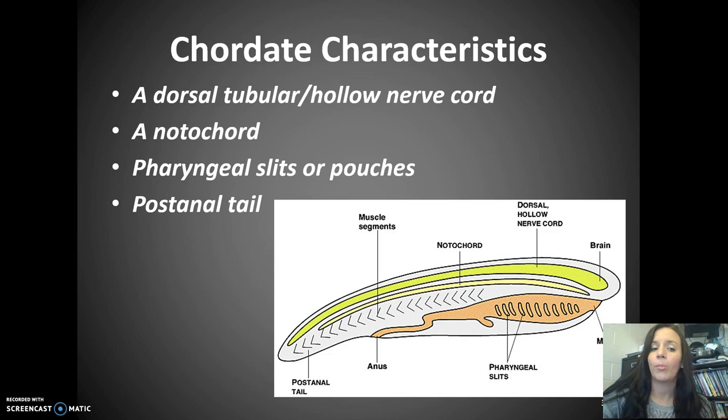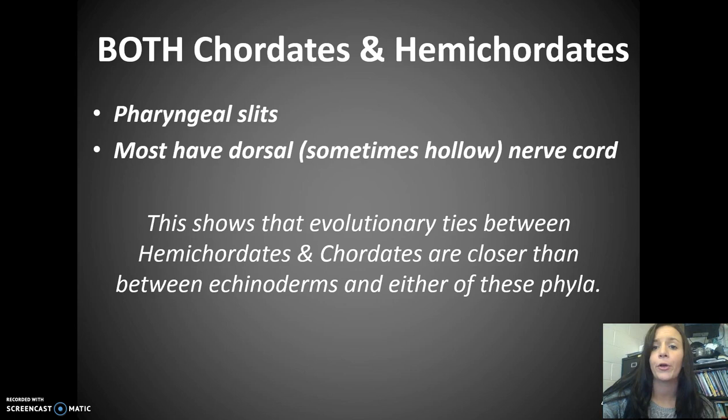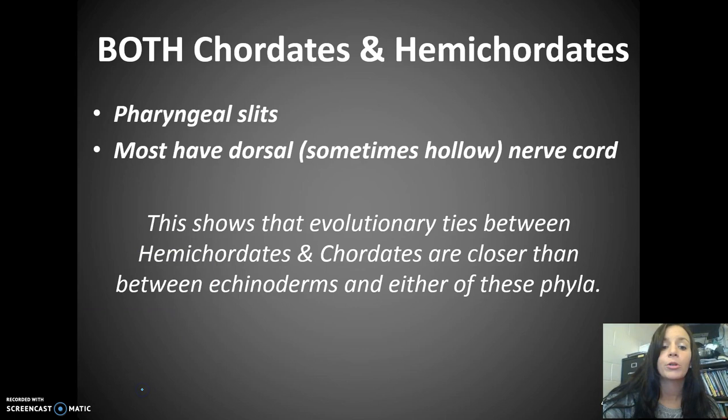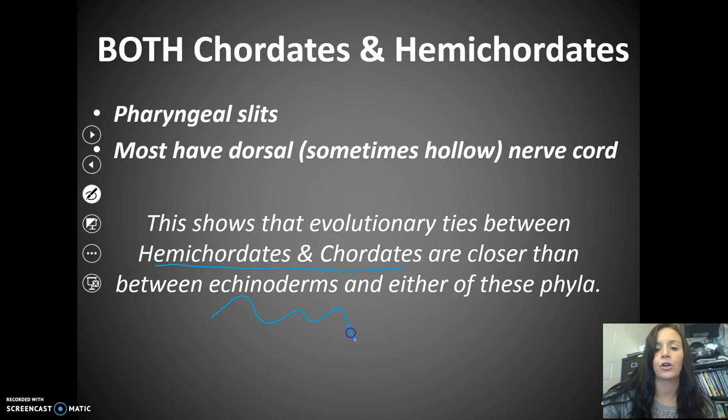It's also important to note that both chordates and hemichordates have the following two characteristics in common: they have pharyngeal slits, and most of them have a dorsal, sometimes hollow, nerve cord. This shows that there are evolutionary ties between hemichordates and chordates, and those ties are closer than they are with echinoderms in either of those phyla.